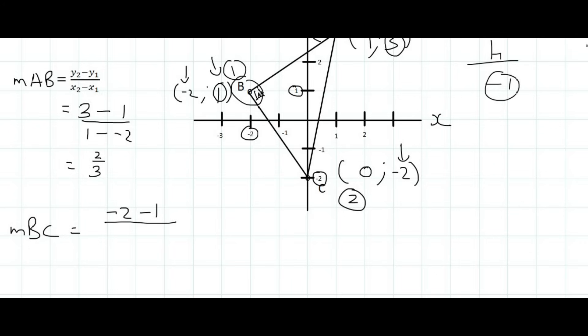The x value of point number 2 is 0, and the x value of point number 1 is minus 2. And so that's going to give us minus 3 over 2. So that is the gradient of BC.